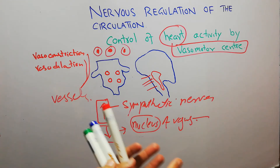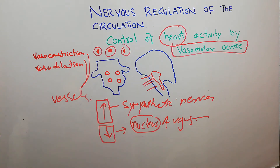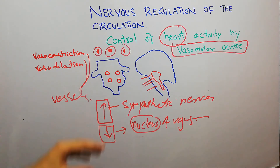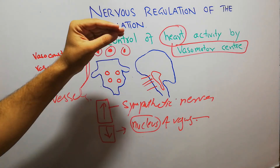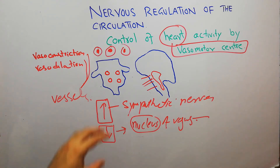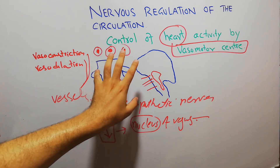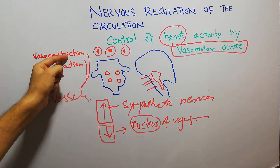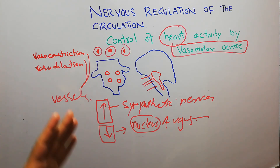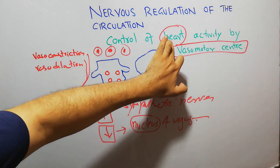So there are two responses: the sympathetic response causes an increase in heart rate with the help of sympathetic nerves, and the parasympathetic response causes a decrease in heart rate with the help of the Vagus Nerve. That signal comes through the nucleus of the Vagus Nerve, which is present near the Vasomotor Center. So the Vasomotor Center is not only controlling vasoconstriction and vasodilation of blood vessels, but also increasing and decreasing the activity of the heart.